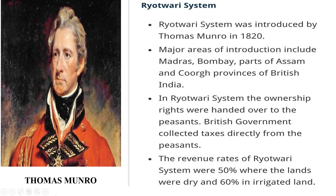Then comes the Ryotwari system. The Ryotwari system was tried on a small scale by Captain Alexander Read in some of the areas that were acquired by the company from Tipu Sultan. Subsequently, it was developed by Thomas Munro and introduced in Madras and Bombay Presidencies. It was gradually extended to the whole of South India and South-Western India. Since in these areas there were no traditional zamindars, the British made settlements with the actual cultivators or ryots who had been tilling the land for generations. Under this system, cultivators remained the owner of land as long as they paid the land revenue. Land revenue was revised after every 20 or 30 years. The revenue was fixed according to the fertility of the soil. Although the system was not bad in itself, since the British revenue officials were corrupt and extremely strict in collecting revenue, they used to take away almost half of the net produce as land revenue.